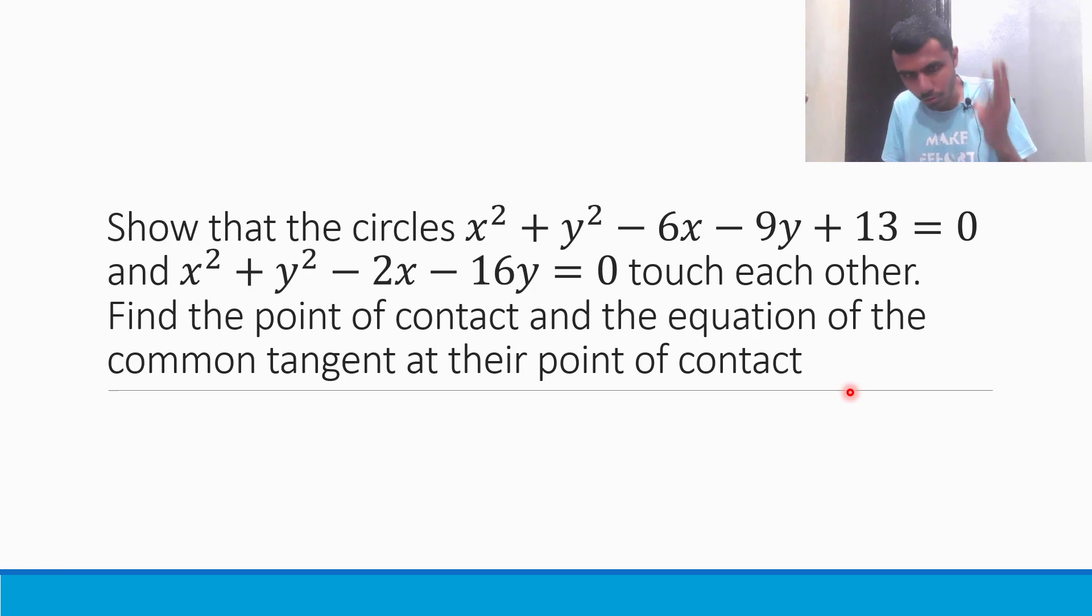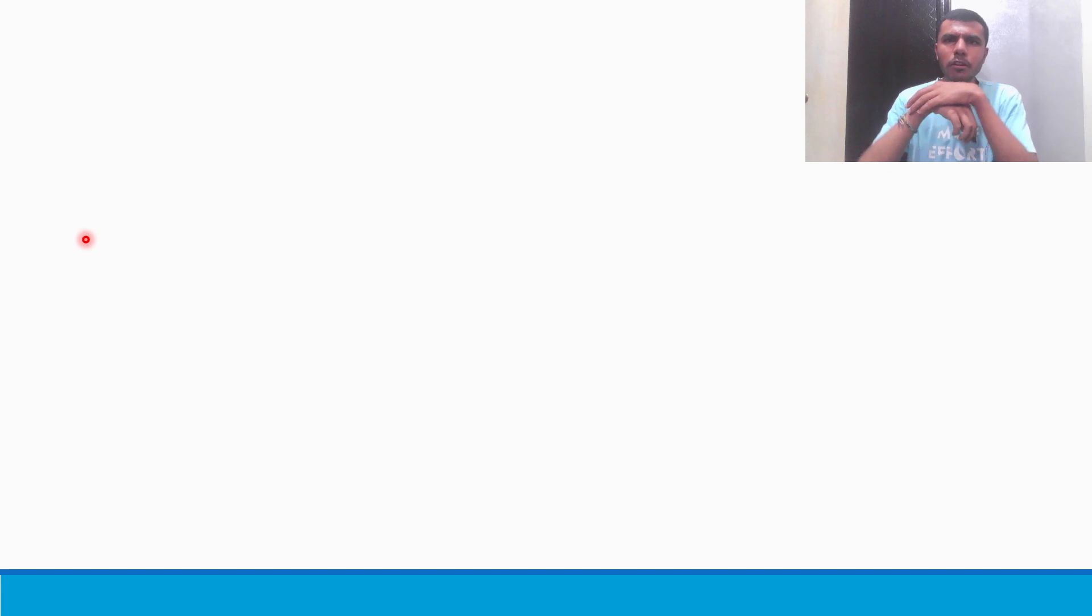So basically, we have to show three things. We need to do three things. Show that the circles touch each other and we have to find the point of contact. The circles touch, they are touching, right? So since they are touching, there will be a point of contact and equation of common tangent at the point of contact. So we have to show that circles touch each other.